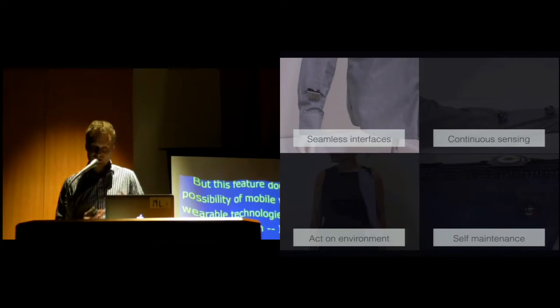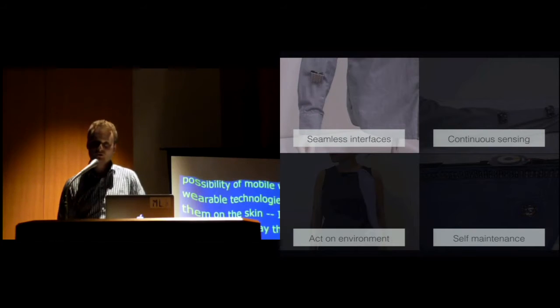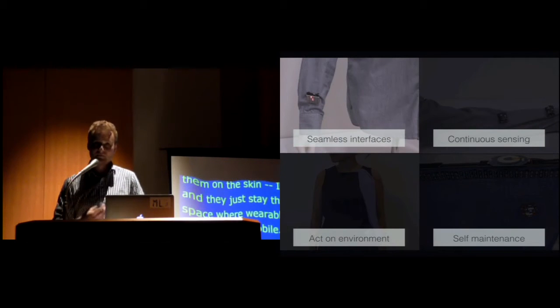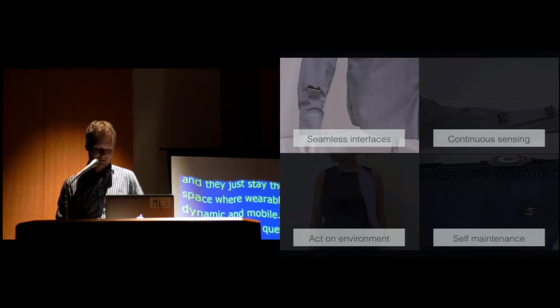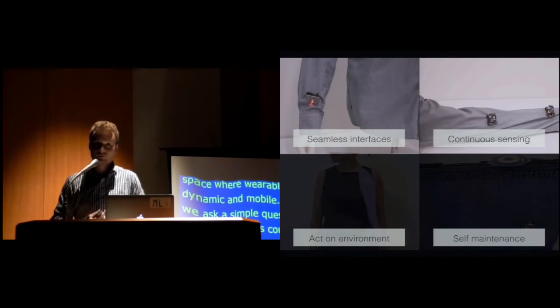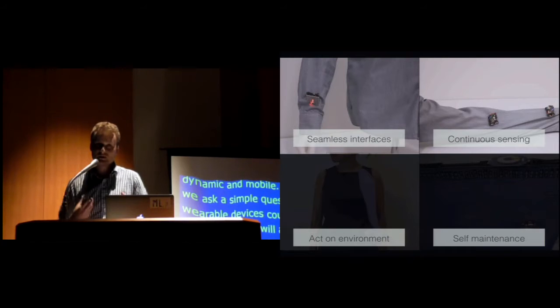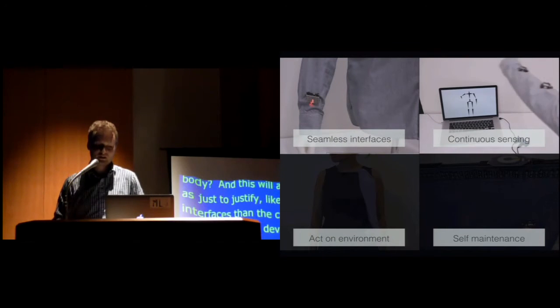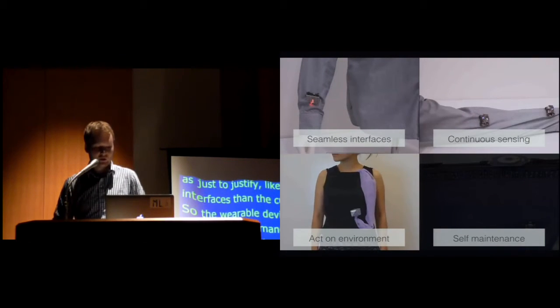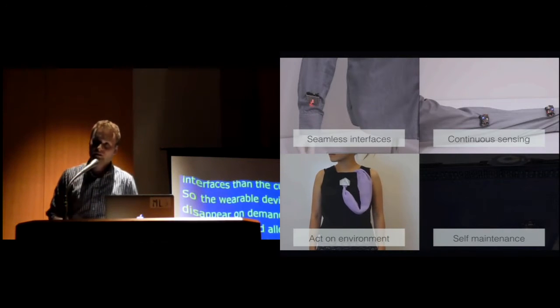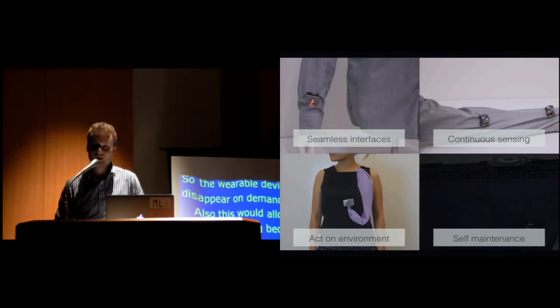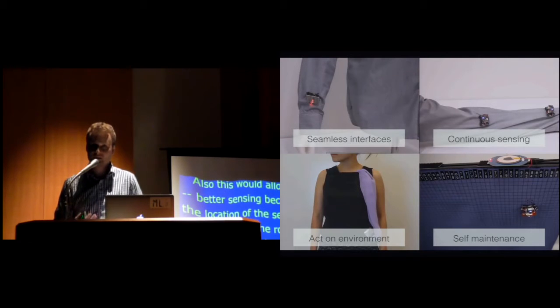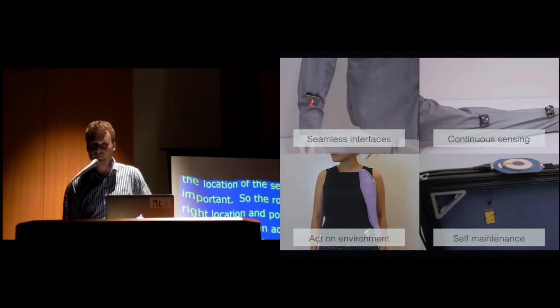And this would allow us things such as more seamless interfaces than the current wearables, so the wearable devices can appear and disappear on demand. Also, this would allow continuous, better sensing, because a lot of times the location of the sensor is very important, so the robots can find the right location and position themselves. And also, they can actually act on their environment, such as the clothing or the human body. And they can maintain themselves, because they can move and find the power source.